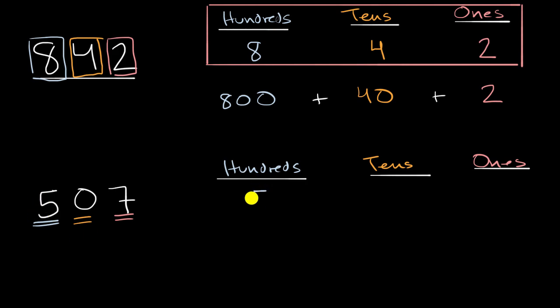we have five hundreds. We see that right over there. And this one's an interesting example, we have zero tens. So we'll just put a zero right over there. And we have seven ones. So we put a seven right over there.